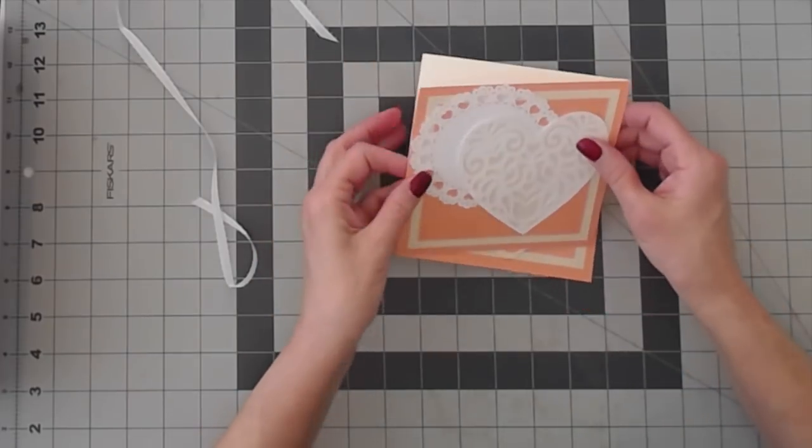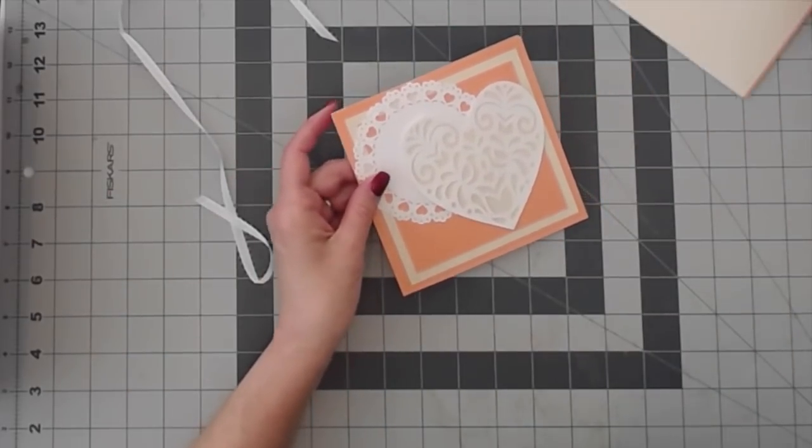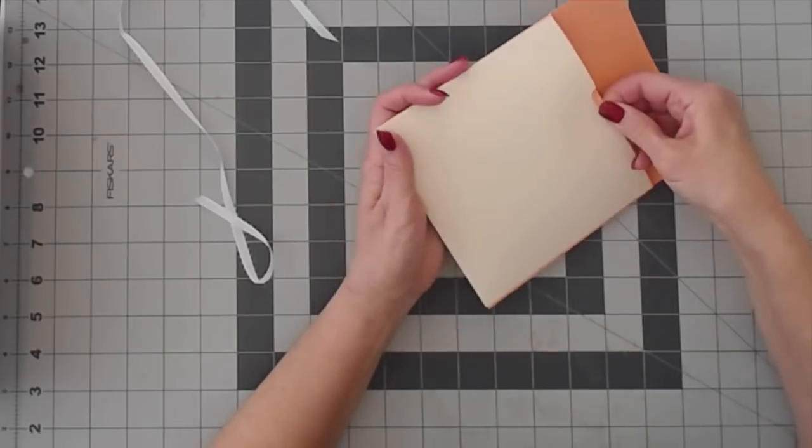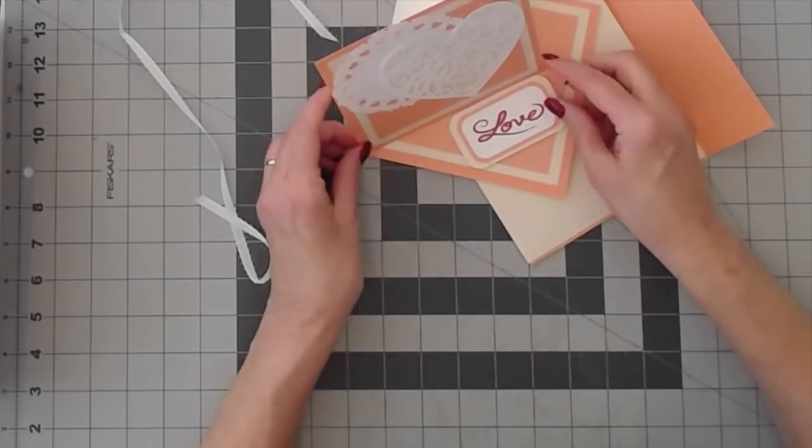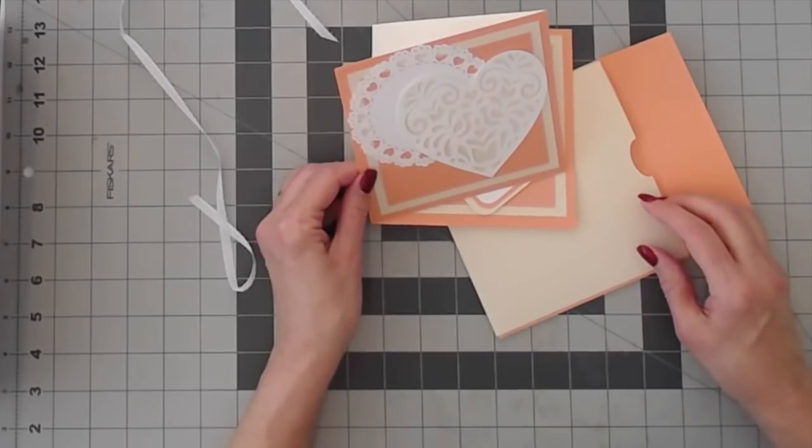And that's it, we're done. You can add bows and change the colors and make it your own. We have a matching envelope. I hope you like it. I hope you'll make some and post pictures, I'd love to see them. Thank you for watching, see you next time.